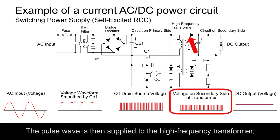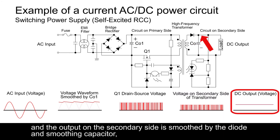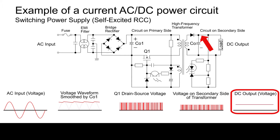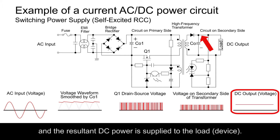The pulse wave is then supplied to the high frequency transformer, and the output on the secondary side is smoothed by the diode and smoothing capacitor, and the resultant DC power is supplied to the load device.